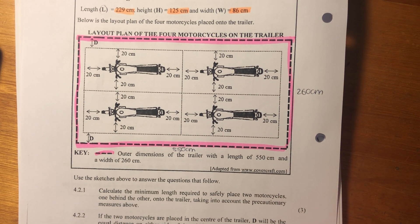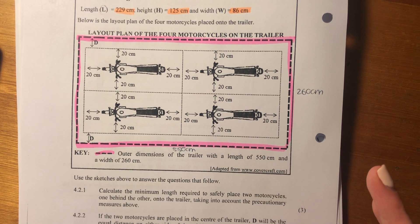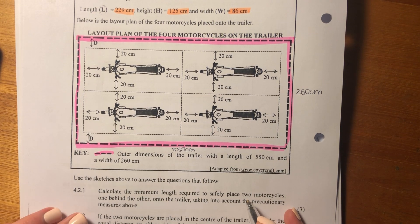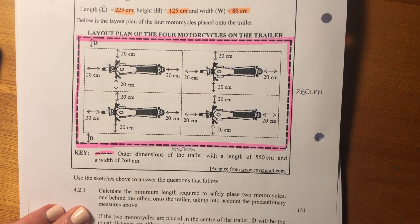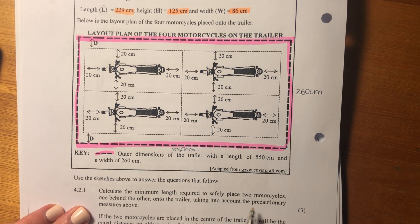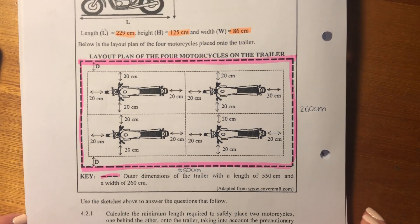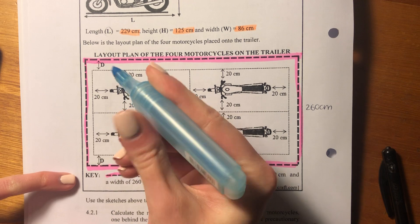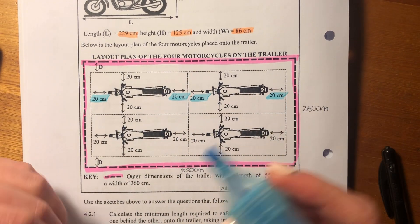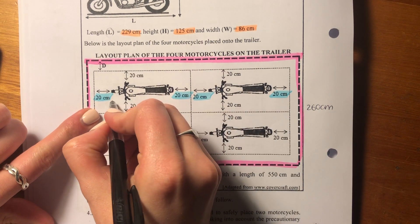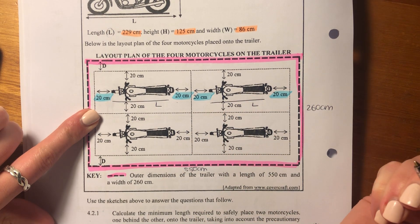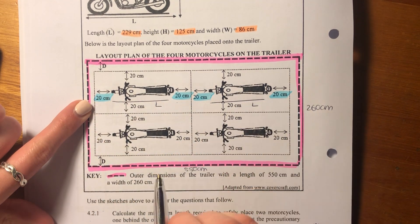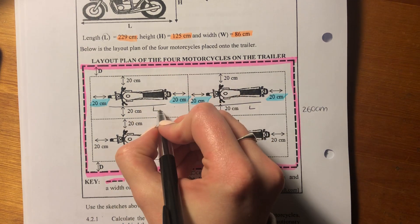Let's see what the questions ask us. So it says use the sketches above to answer the questions that follow. Calculate the minimum length required to safely place two motorcycles, one behind the other. So we're looking at it this way because they're behind each other. This is next to, this is behind each other. So it's important to understand the words being used. Onto the trailer, taking into account the precautionary measures above. The precautionary measures, you might be like, what's that? They're talking about the 20 centimeters on each side. So what we have to add together is the 20 centimeters plus the length of the motorcycle plus 20 centimeters plus 20 centimeters plus the length of the motorcycle plus 20 centimeters. So just saying taking into account those precautions. What is the length? We know the length equals 229 centimeters. So let's write down what we need to.